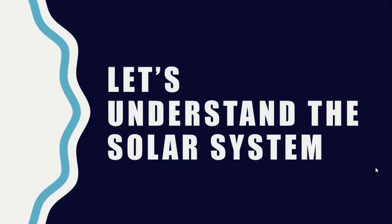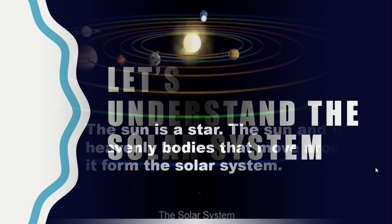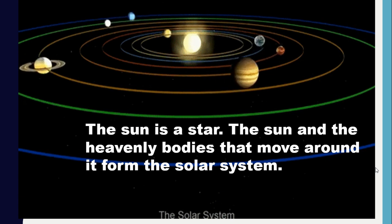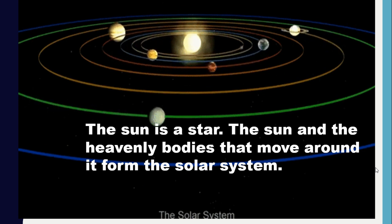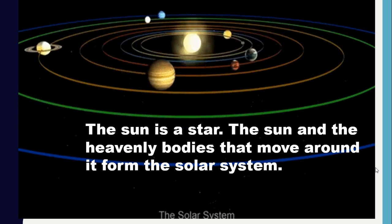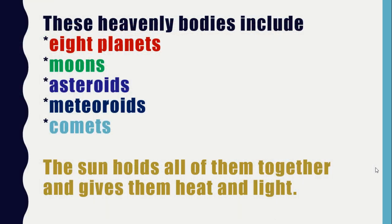Now let us understand what is the solar system. The Sun is a star. The Sun and the heavenly bodies that move around it form the solar system. These heavenly bodies include eight planets like Mercury, Venus, Earth, Mars, Jupiter, Saturn, Uranus, and Neptune. Moons, asteroids, meteoroids, and comets are also part of the solar system.